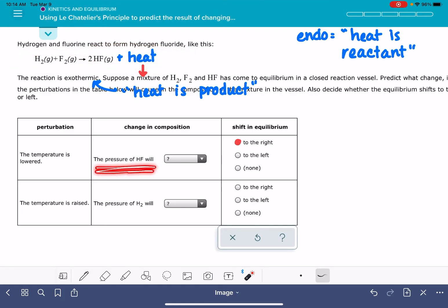It's asking us about the HF. Since the position of equilibrium is shifting to the right, that means we're going to be increasing the amount of HF.